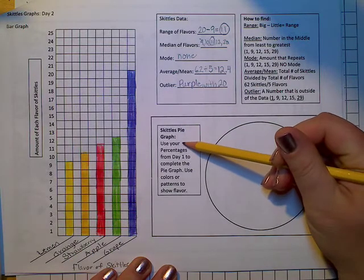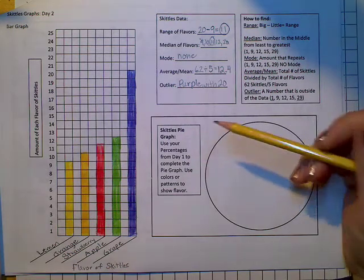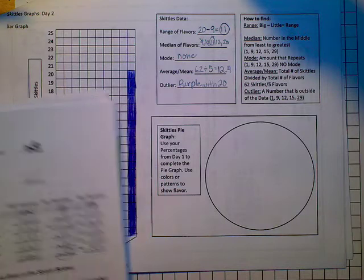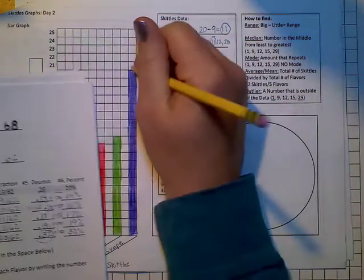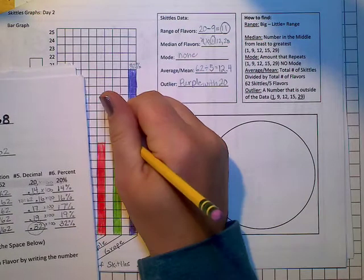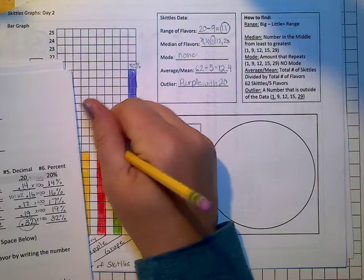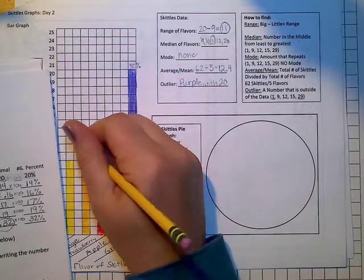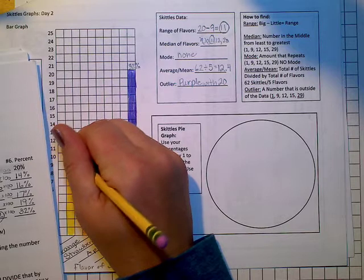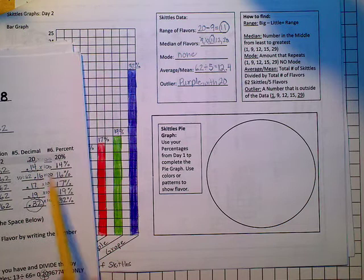Last part is it says use a pie graph. Use your percentages from day one to complete the pie graph. So that part I do need. And actually I'm just going to put my percentages on the top. So this is thirty-two percent. This is nineteen percent. This is seventeen percent. Sixteen percent. And fourteen percent. That's where I got these ones right from over here when we did percentage yesterday.